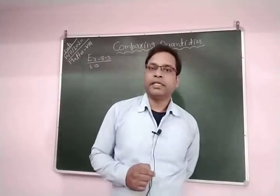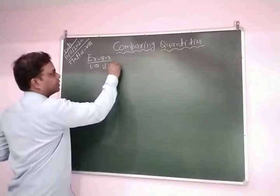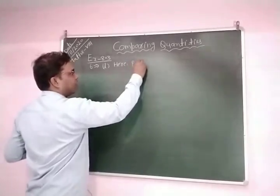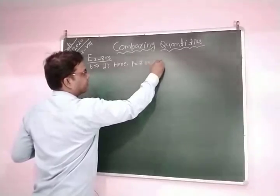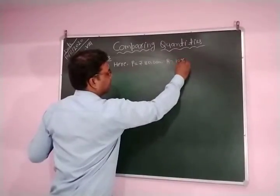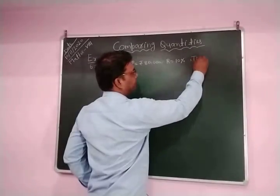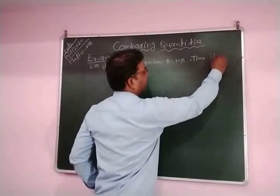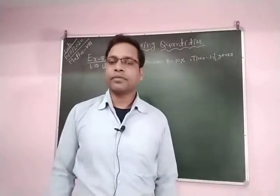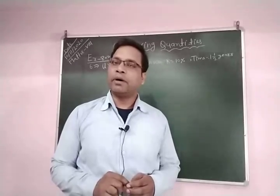Question number 6. Principal is equal to Rs.80,000. Rate is 10%. Time is equal to 1 and a half years. So first we find amount for one year, because we need to find compounded interest compounded annually. Since time is given 1 and a half years, we first find the amount for one year.